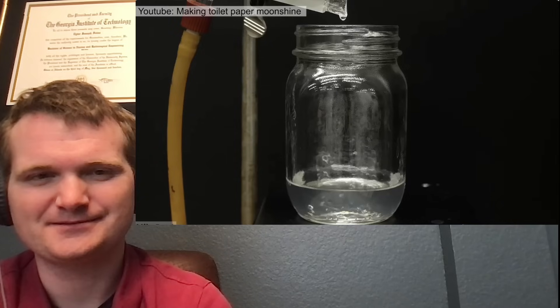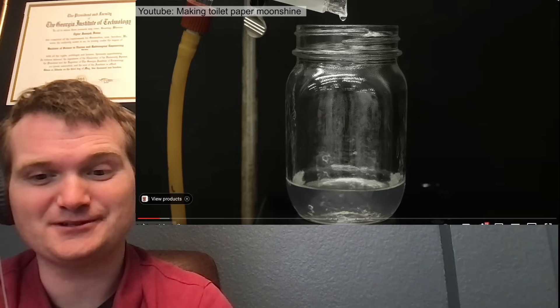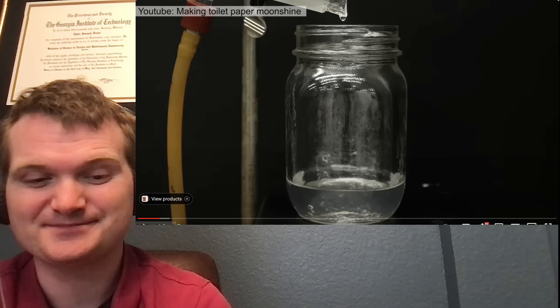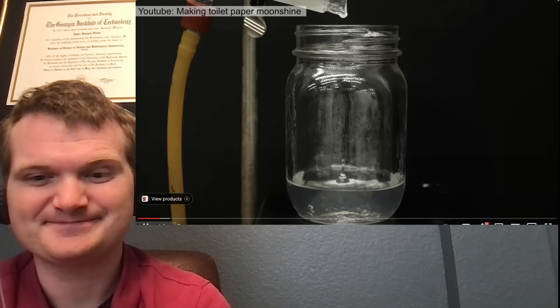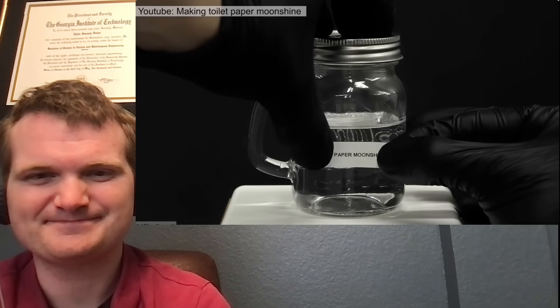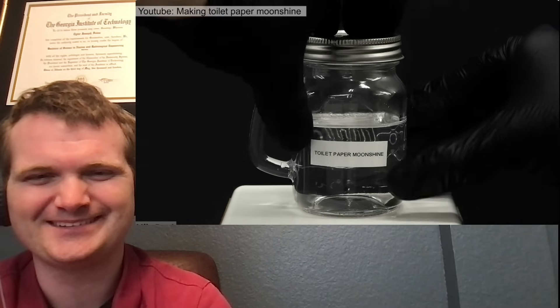which I fermented to alcohol using yeast, and then I distilled it to make—Just like everything is nuclear, because everything is atoms that all have atomic nuclei. My toilet paper moonshine. The whole process ended up being surprisingly efficient, and I figured it was the best place to start.